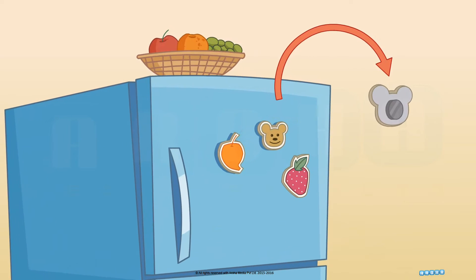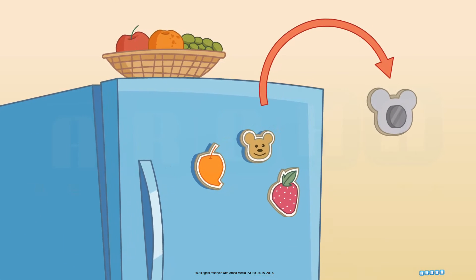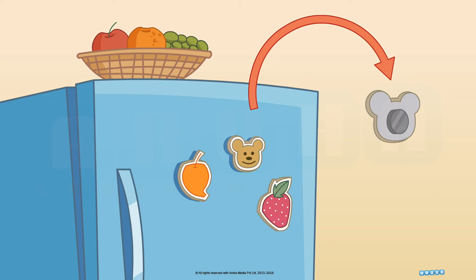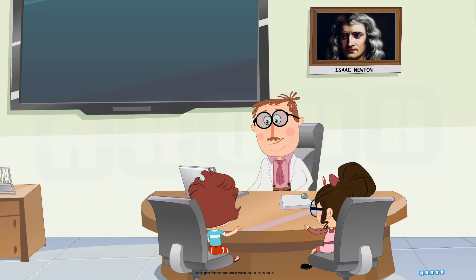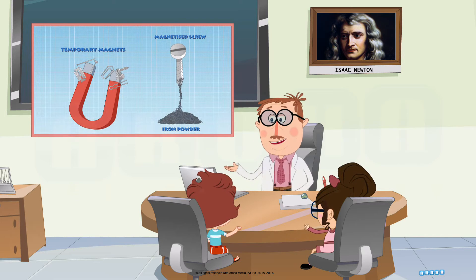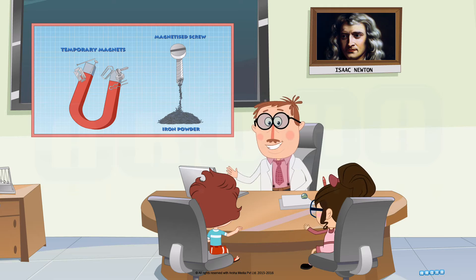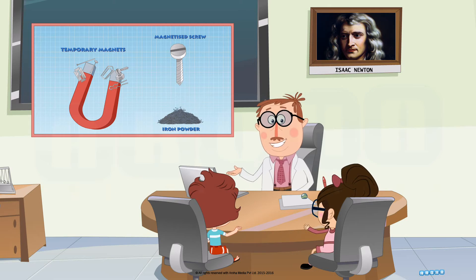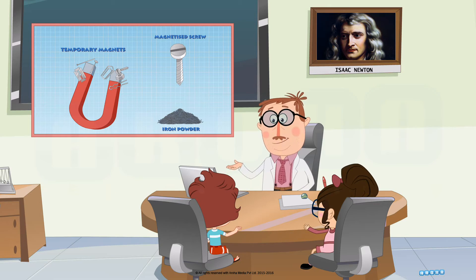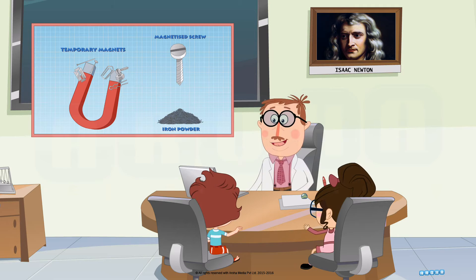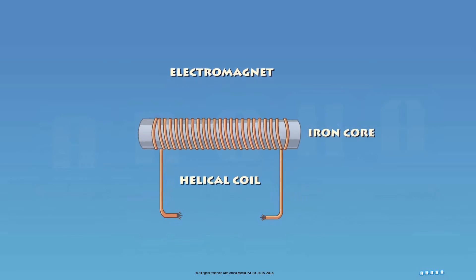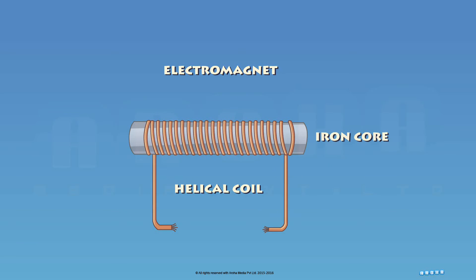You must have seen the magnet stickers that we stick onto the refrigerator. They are all permanent magnets. Temporary magnets are things which become magnets when they are within a strong magnetic field and lose their magnetism when they are out of the magnetic field. And electromagnets are the helical coils of wire tightly wound, usually with an iron core.